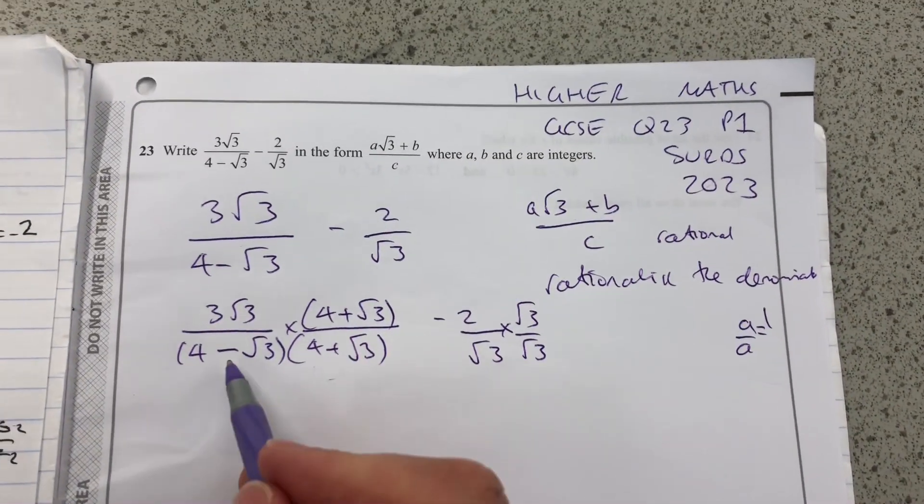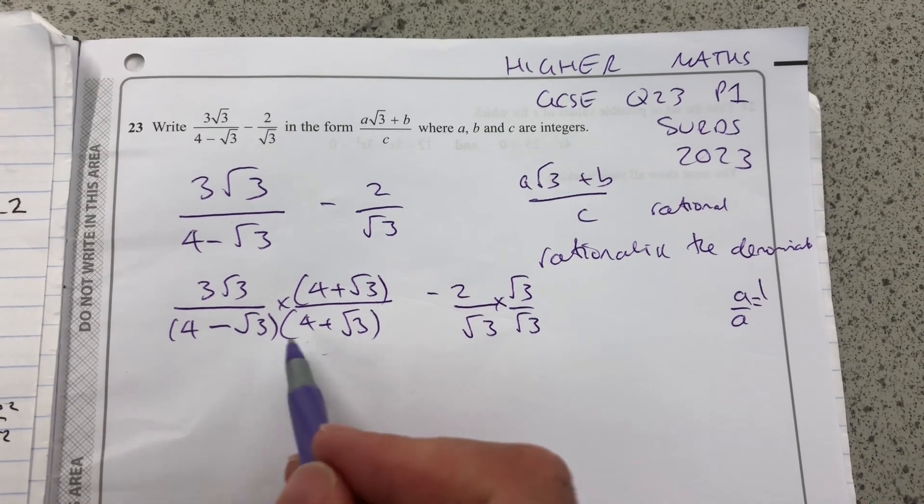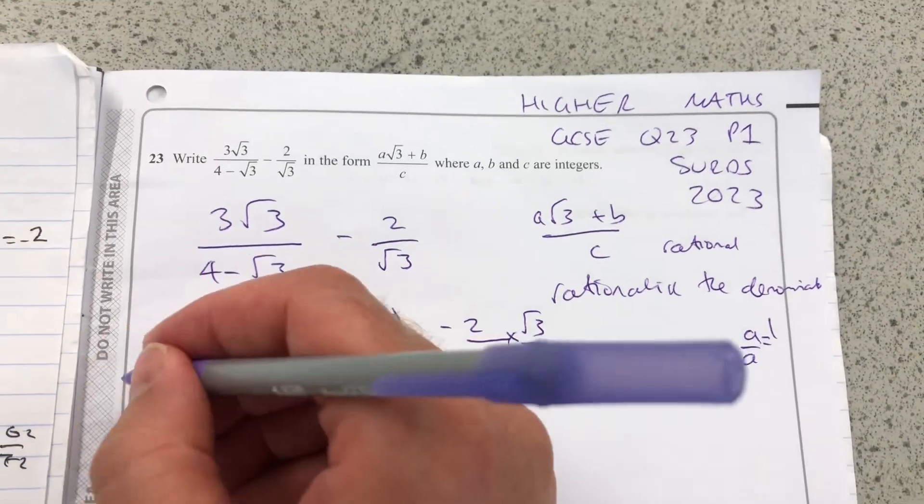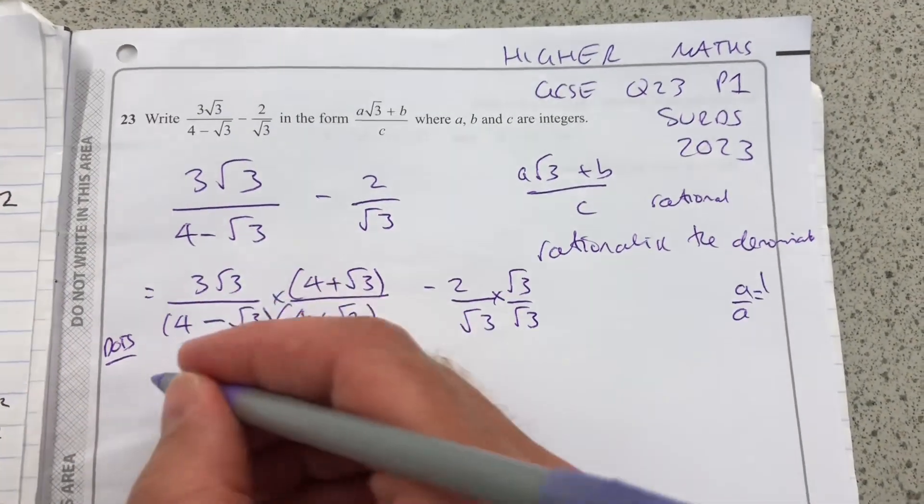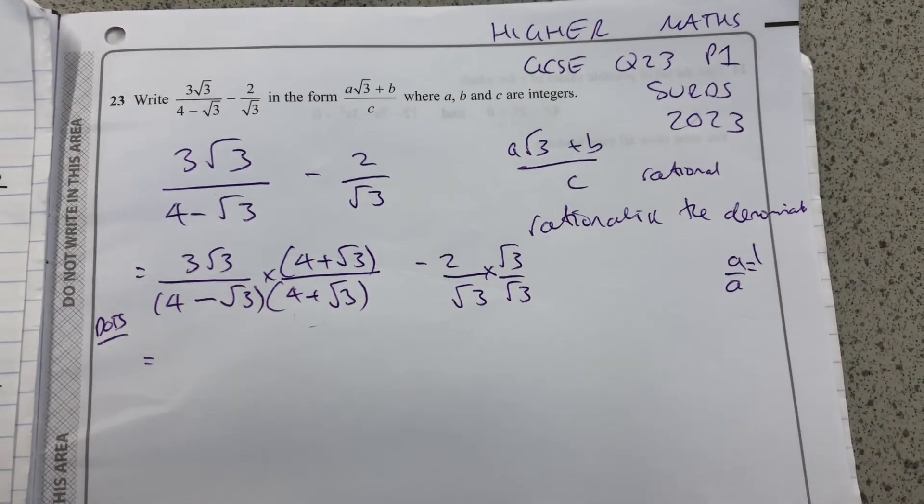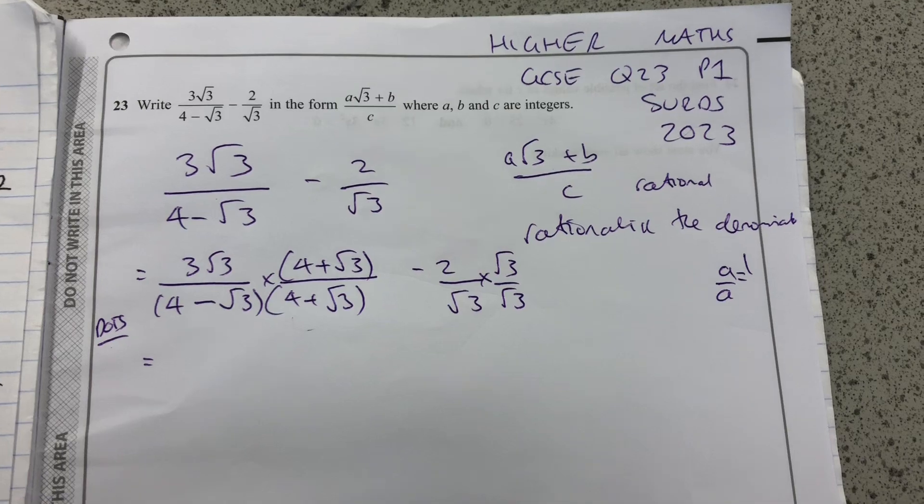OK, but I want to change the sign here so that the middle terms are going to cancel. If you know about difference of two squares, it's a very similar thing here. And those who are going to take further maths will see a thing called a complex conjugate. OK.